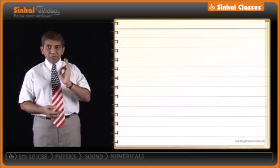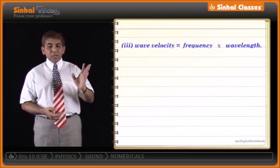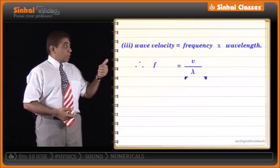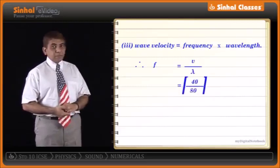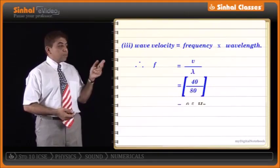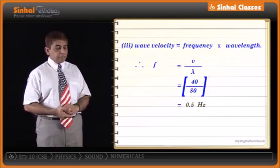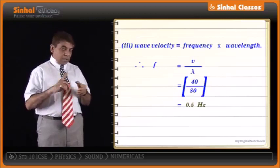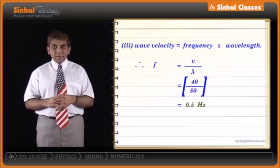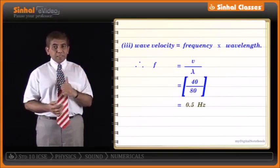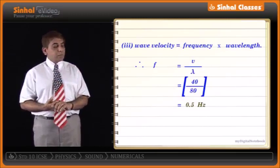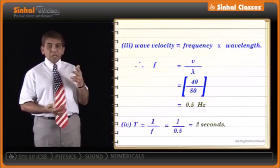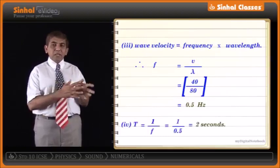Using wave velocity equals frequency times wavelength: 40 = f × 80, so frequency = 40/80 = 0.5 Hz. Since time period is the reciprocal of frequency, time period = 1/0.5 = 2 seconds. One should be very careful about units. This was just a recap for the ninth standard standard.